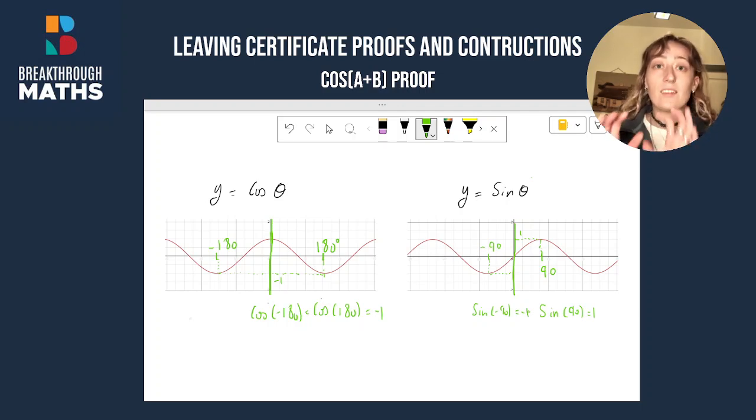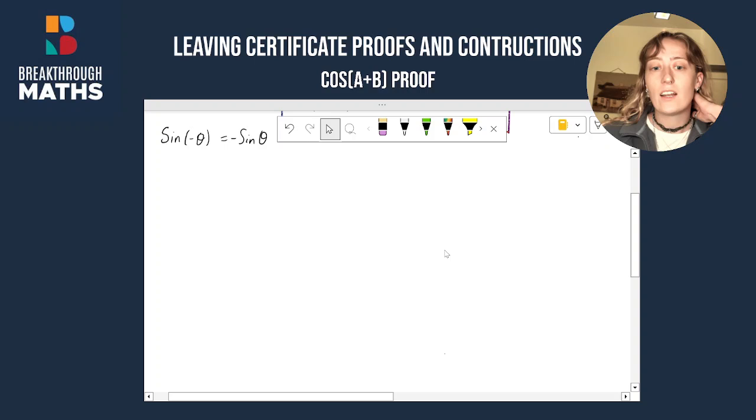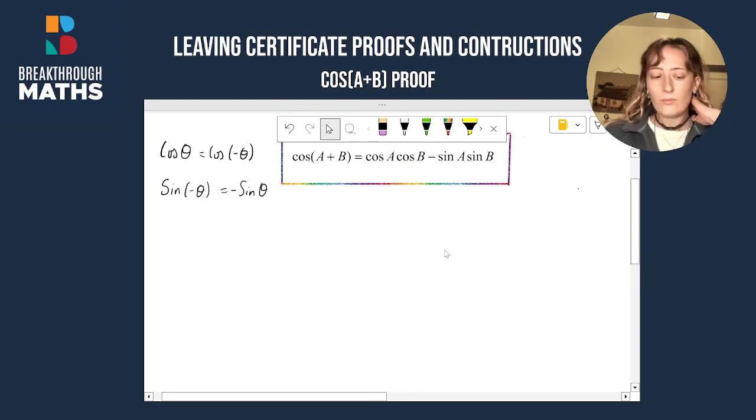So this anti-symmetry in the sine θ graph is the reason that we have minus sin θ is equal to sin of minus θ. We're going to make a lot of use of this property in a lot of trigonometric proofs.